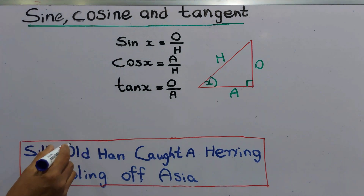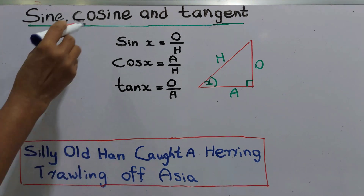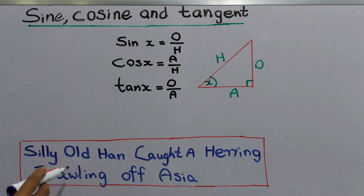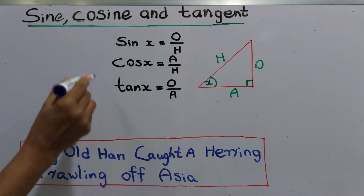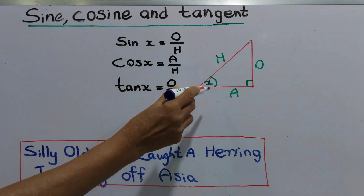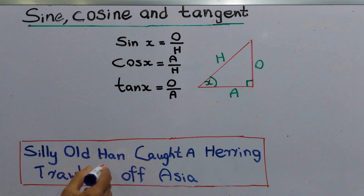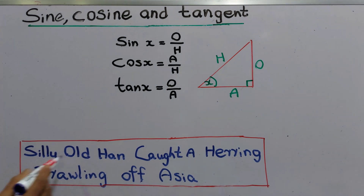When we apply these functions to this triangle, some people find it helpful to use a simple sentence. The first letter of each word describes sine, cosine, and tangent, as well as hypotenuse, opposite, and adjacent. The sentence is: Silly Old Hand, Caught A Hearing, Trolling Of Fascia.